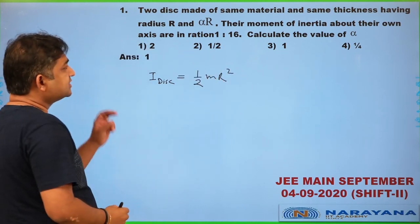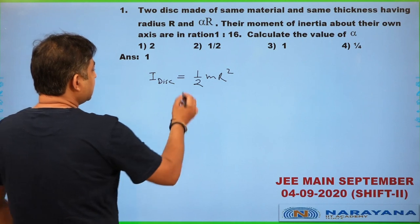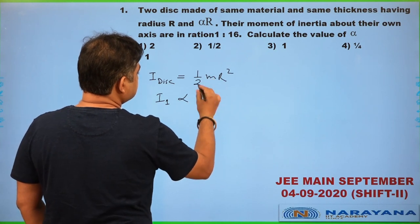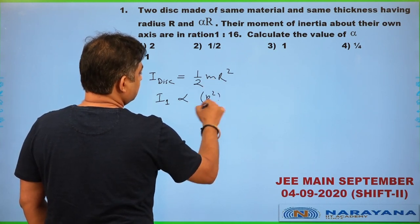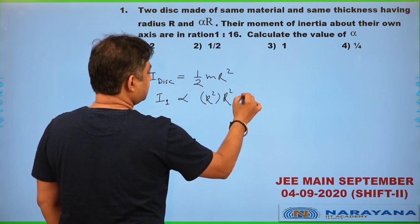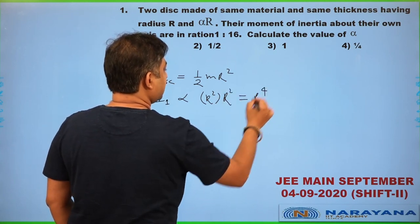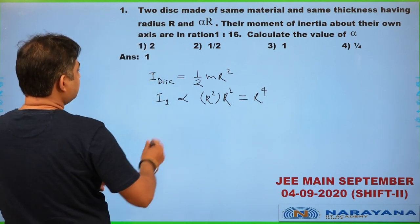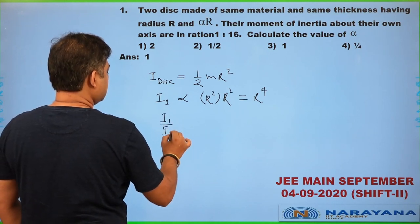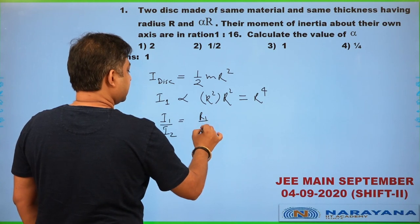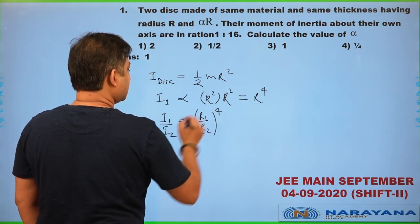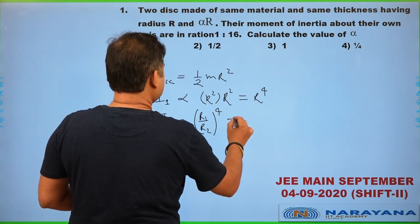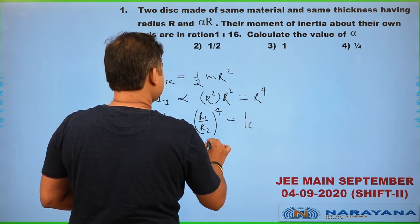As their mass density and thickness are identical, the moment of inertia of disc 1 is proportional to mass, which has a proportionality with r², and that r² again gives something proportional to r⁴. If we need to calculate the ratio I₁/I₂, it is simply (r₁/r₂)⁴. Their ratio of moment of inertia is 1/16.